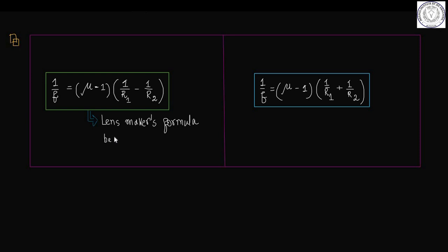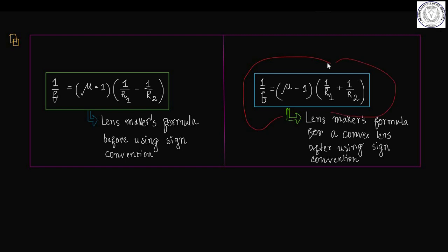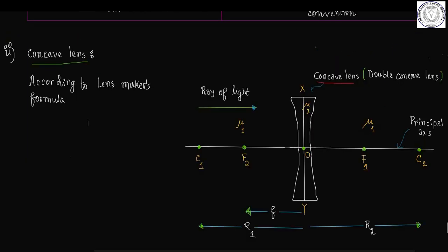On the left-hand side we have the Lensmaker's formula before using sign convention for a convex lens: 1 by f equals mu minus 1 into 1 by R1 minus 1 by R2. On the right-hand side we have the Lensmaker's formula after using sign convention, which should be used for solving numericals: 1 by f equals mu minus 1 into 1 by R1 plus 1 by R2.